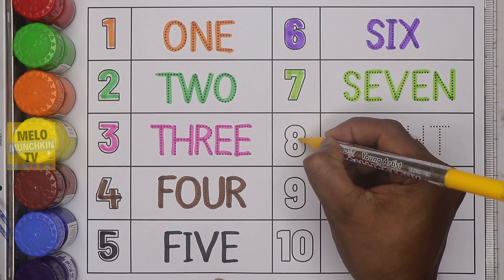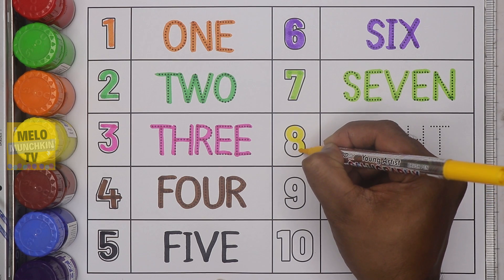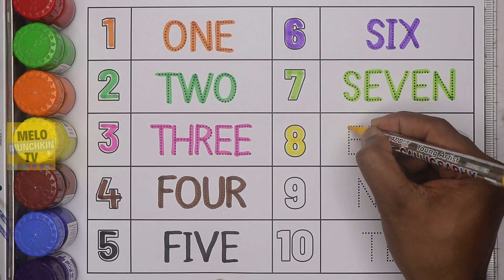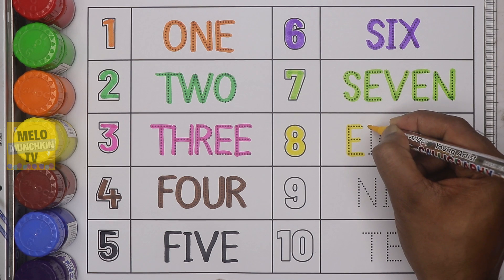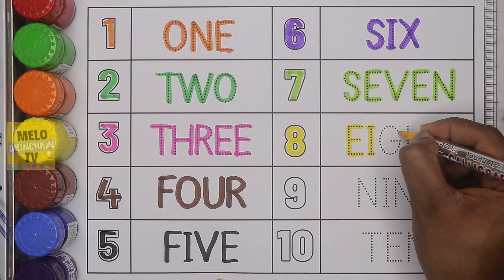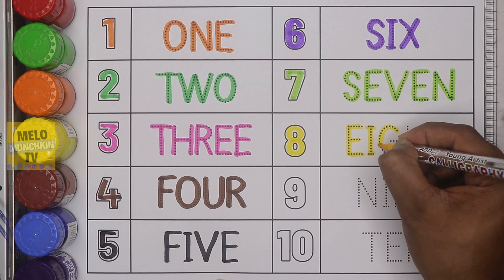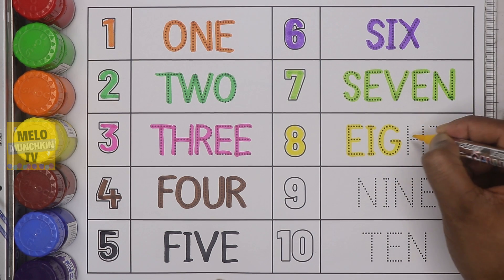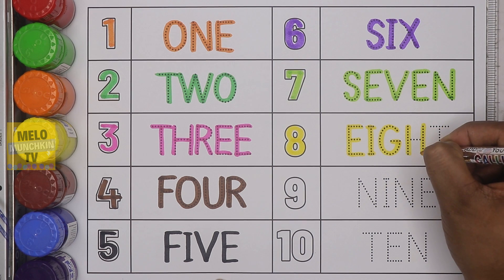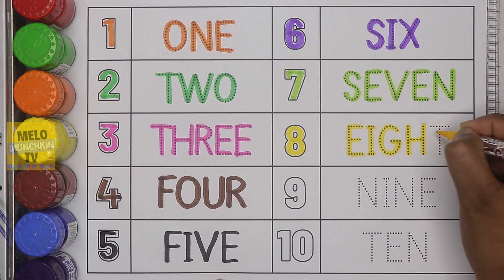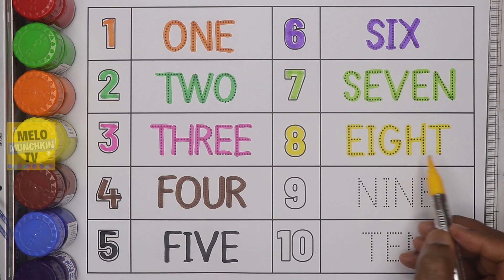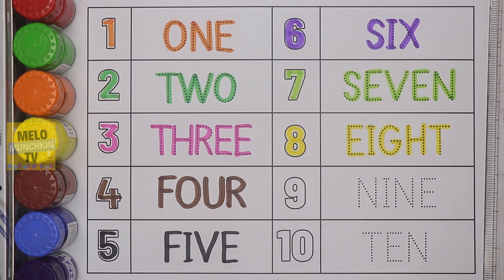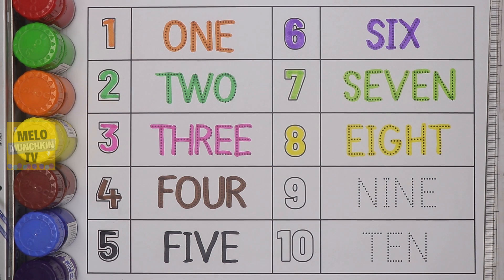Next, I'll take yellow color and write number eight. This is number eight and the spelling is E-I-G-H-T, eight.